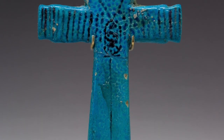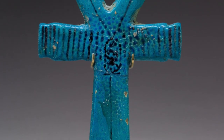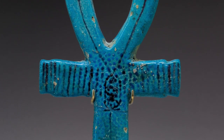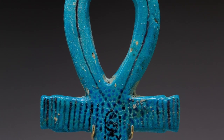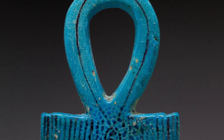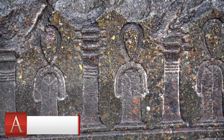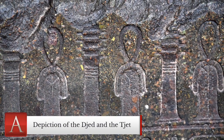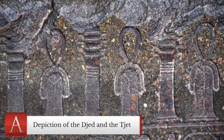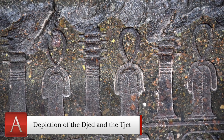The Ankh is one of the most recognizable symbols of Ancient Egypt. It is a cross with a loop at the top and dates to the early dynastic period, between circa 3150 and 2613 BCE. Its origins are unknown, but a popular theory is that it developed from the Chet, or the Knot of Isis, which is the belt buckle of the goddess Isis and symbolizes female genitalia and fertility.